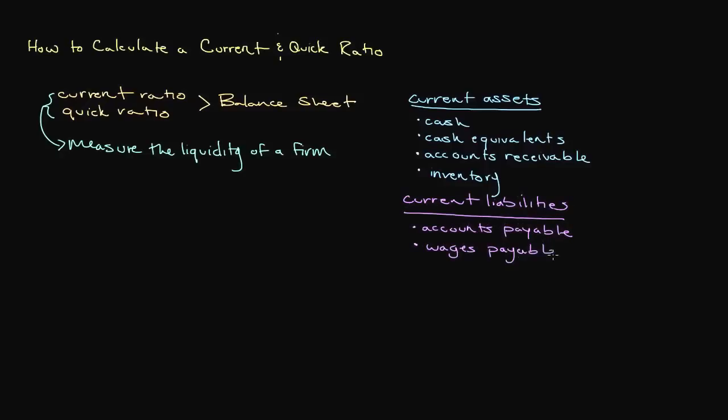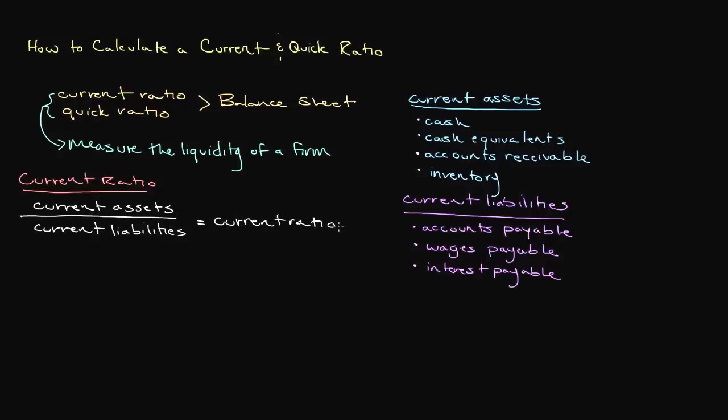Now that we've discussed the basic elements of both ratios, let's walk through how to actually calculate them. Let's start with the current ratio. To calculate the current ratio, you first need to determine the amount of a firm's current assets and current liabilities. These are commonly reported in total on a firm's balance sheet as separate entries. Once you've located both current assets and current liabilities, divide the firm's current assets by its current liabilities.